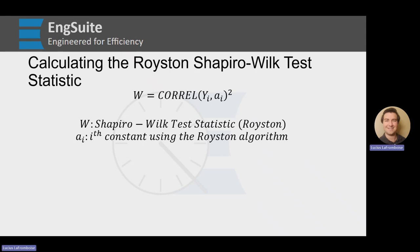Well, W, our approximated Shapiro-Wilk test statistic, equals the correlation of Y_i, our ordered data, and A_i, the Royston constants in order, and then we square that correlation.